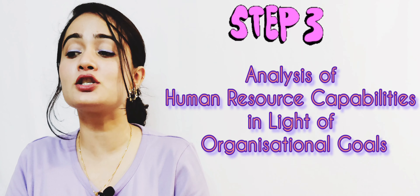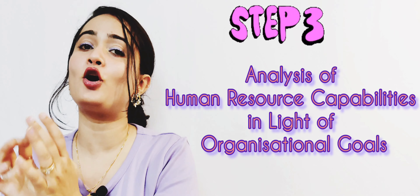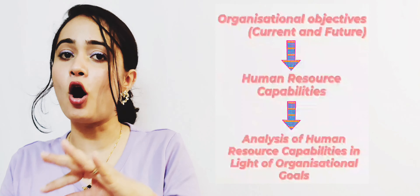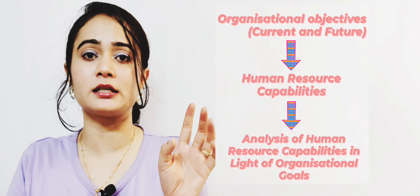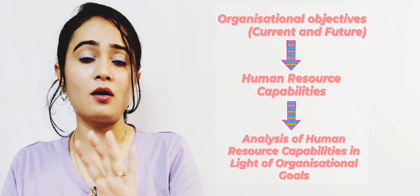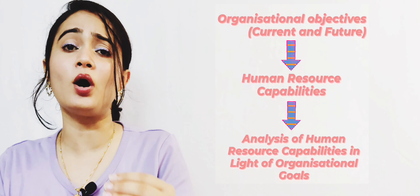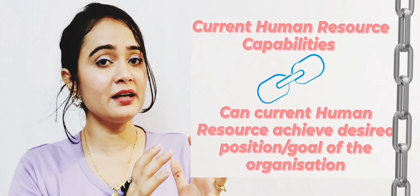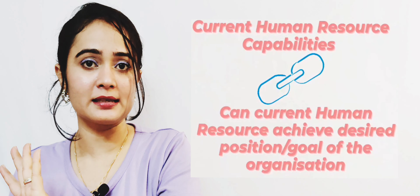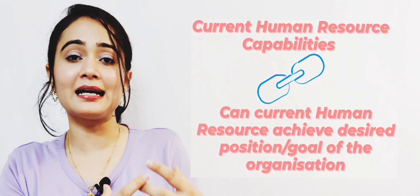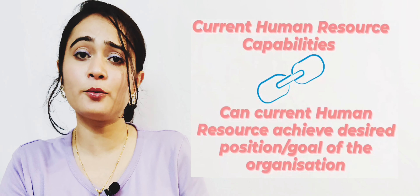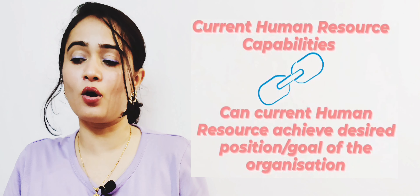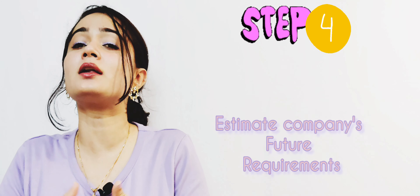The third step is to analyze your current HR capacity in light of your goals. It is a systematic process: first we understand the objectives of the organization, second we do an internal competency and capability scan of our people, and third we attach what people we currently have to what the objectives are — checking whether our current HR position can achieve the desired organizational goals or not.